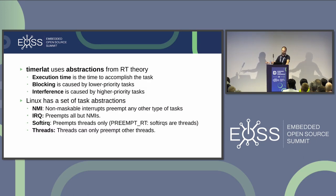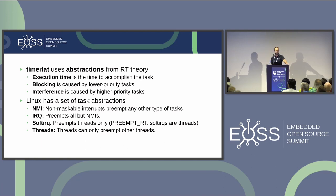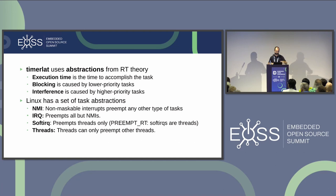The auto-analyze uses abstractions from real-time theory. Execution time is the time to accomplish a task — for example, an IRQ handler running for 10 microseconds. Blocking happens when a lower-priority task postpones the execution of a higher-priority task. Interference is the contrary — when a higher-priority thread preempts a lower-priority thread. So: blocking comes from low priority, interference from high priority.